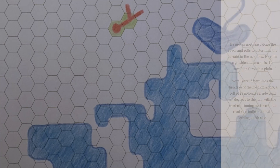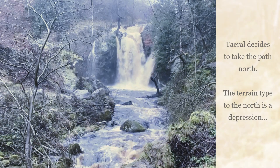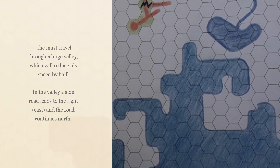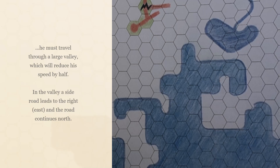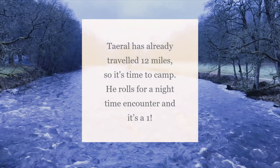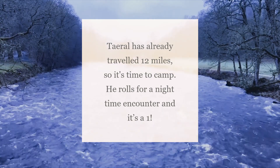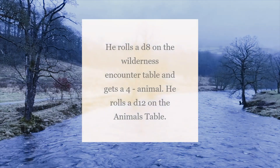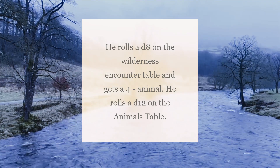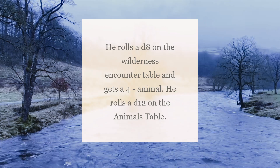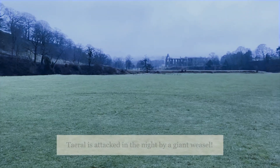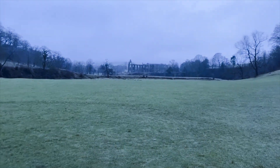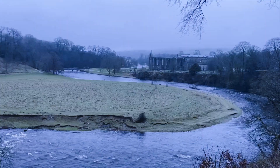Tyrell decides to take the path north. The terrain type to the north is a depression — he must travel through a large valley, which will reduce his speed by half. In the valley a side road leads to the right east and the road continues north. Tyrell has already travelled 12 miles, so it's time to camp. He rolls for a night time encounter and it's a 1, so he rolls a d8 on the wilderness encounter table and gets a 4: animal. He rolls a d12 on the animals table. Tyrell is attacked in the night by a giant weasel. We now have a much more robust and detailed wilderness, which is generated completely at random and allows for almost complete surprise for the solo Dungeons and Dragons player.